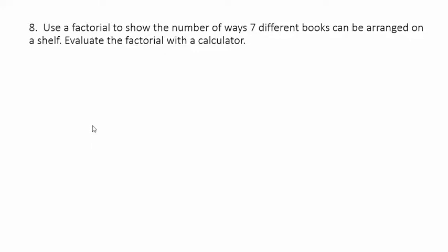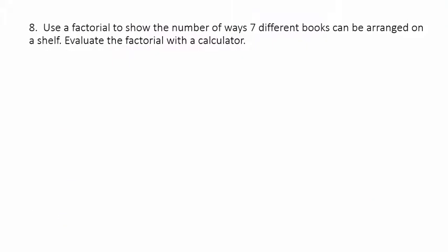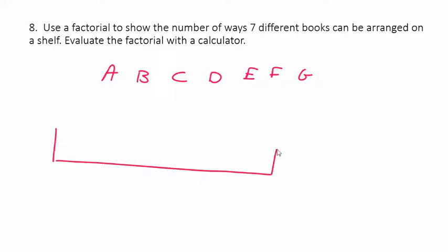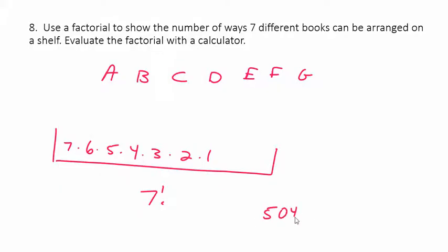Use a factorial to show the number of ways seven different books can be arranged on a shelf, then evaluate with a calculator. This is the exact same problem as people in a race — here we're arranging seven books instead of eight people in a race. Whatever we pick to put on the shelf first, we have seven choices, then six, all the way down. It's seven factorial. Seven factorial is 5,040 different ways to arrange the books.